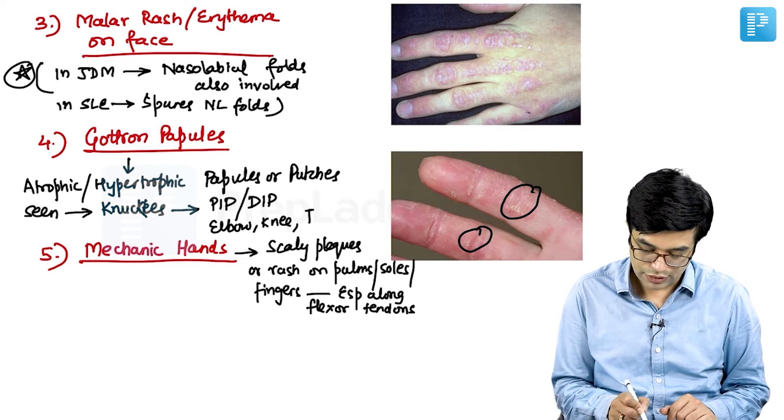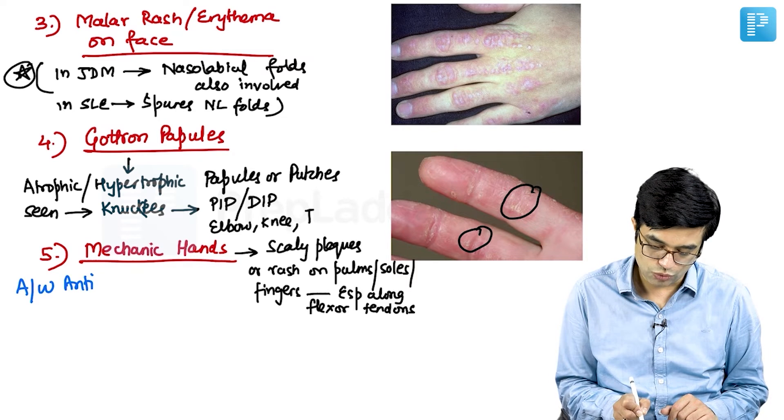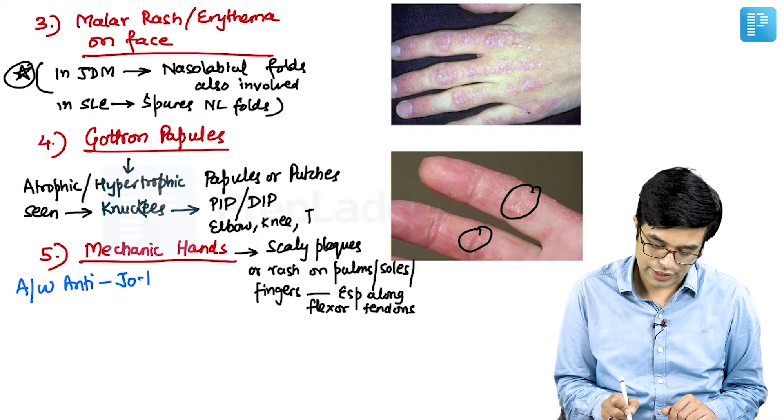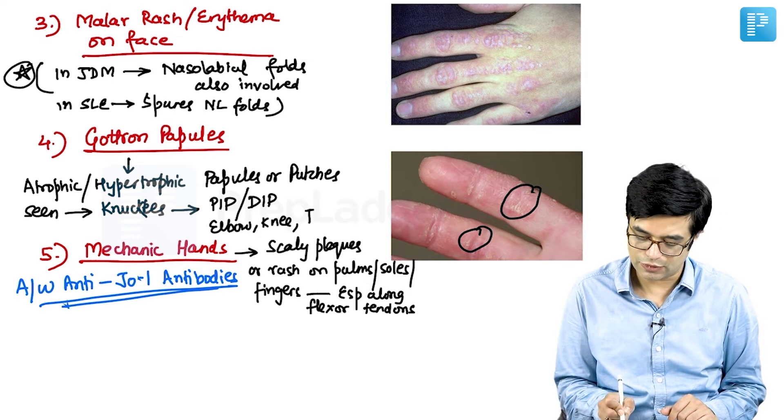Mechanic hands, potential MCQ, they are strongly associated with anti-Jo-1 antibodies. They are overall rare, but can be seen in some of these children.